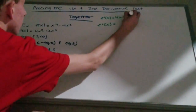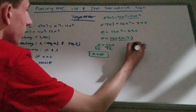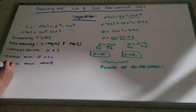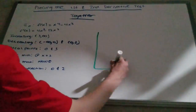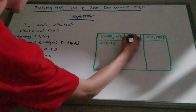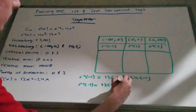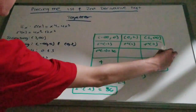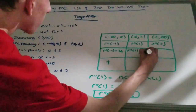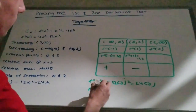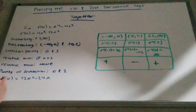Now we're done with the first derivative test for this example and we move on to the second derivative test, where we first have to find the points of inflection. Using our points of inflection, we have intervals from negative infinity to zero, zero to two, and two to infinity. We plug in numbers from inside the intervals into the second derivative to determine whether each interval is concave up or concave down. The intervals negative infinity to zero and two to infinity are both concave up, and zero to two is concave down.